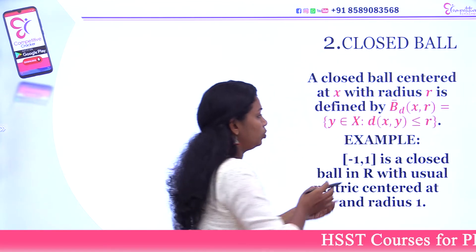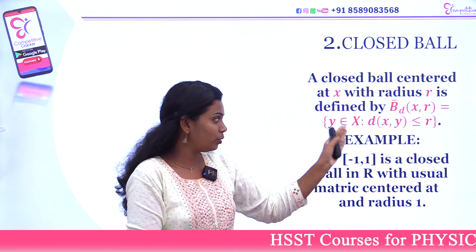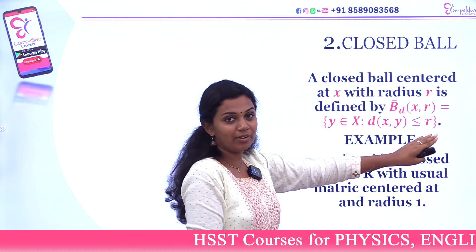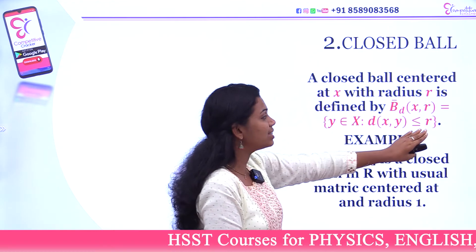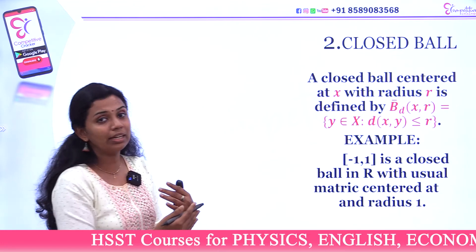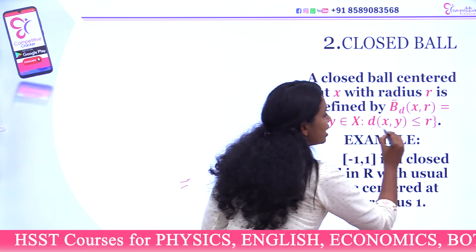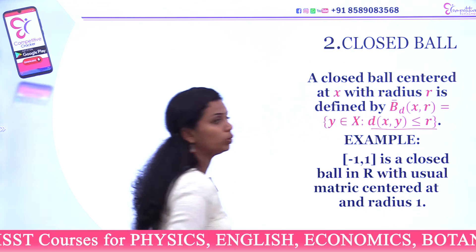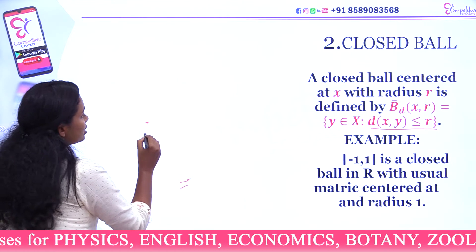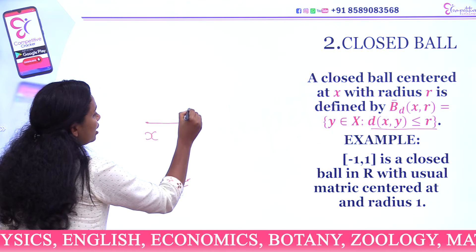The closed ball B̄(x, r) is equal to the set of all y belonging to X such that d(x, y) is less than or equal to r. The difference between the open ball and closed ball is less than versus less than or equal to r.